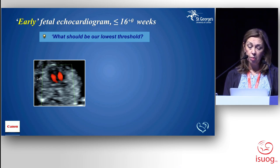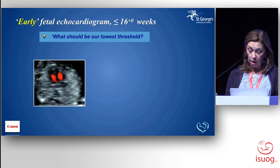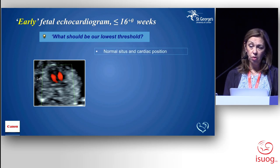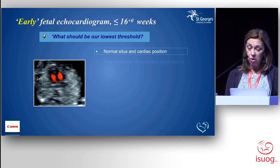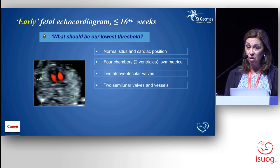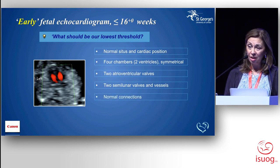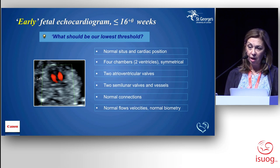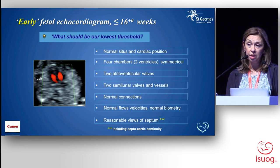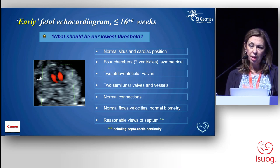At this stage, what is our threshold? That is what I establish on a daily basis, because I scan a lot of patients below 16 weeks. There is a minimum I need to see to say this is fine at 12 to 16 weeks — basically almost everything you see on your 20-week scan: normal situs, normal cardiac position, four chambers, two atrioventricular valves, two semilunar valves, symmetrical ventricles, two great arteries in normal position, correct connections, normal flow velocities, measurement of at least the aortic and pulmonary valves within normal range, and reasonable views of the ventricular septum to rule out ventricular septal defects and overriding aorta to exclude tetralogy of Fallot.